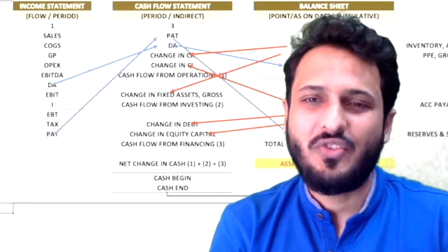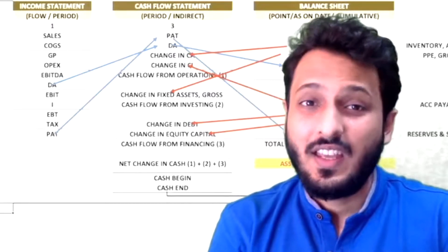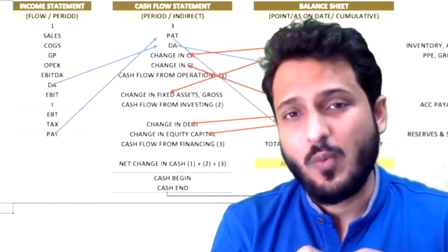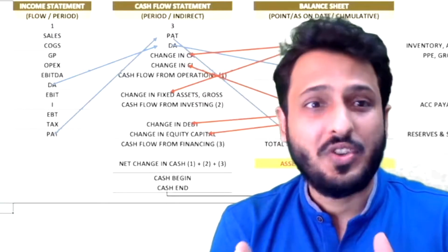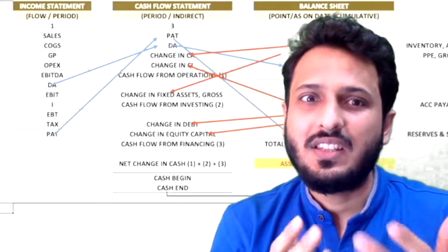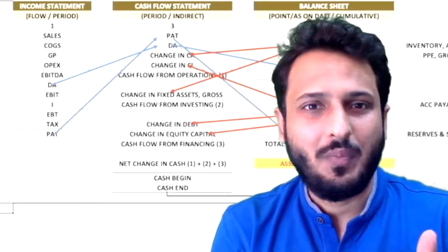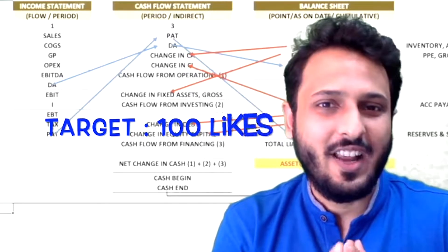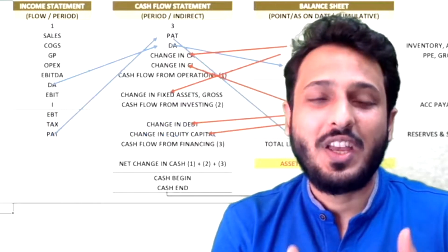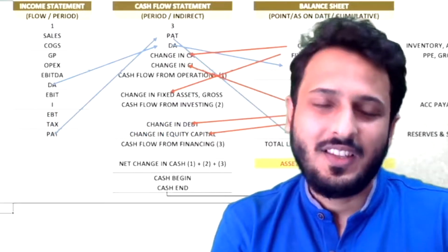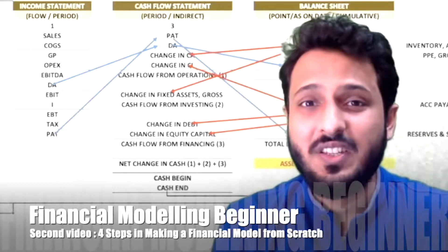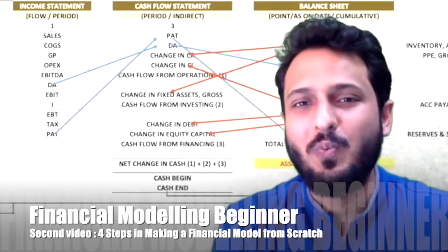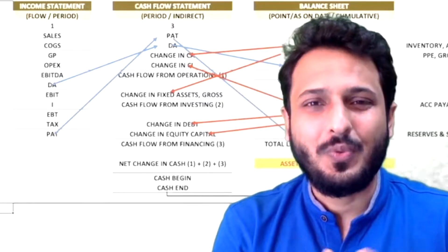This is the second video of the three-video series. In this video we will look at the steps we are going to follow to make a financial model from scratch. We are making a three-statement financial model, so we use the income statement, balance sheet, and cash flow statement. Please share these three videos with your friends who are beginning in financial modeling or want to begin — this is the crisp way to start.